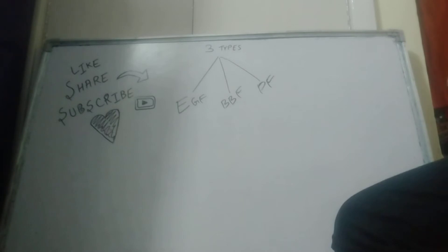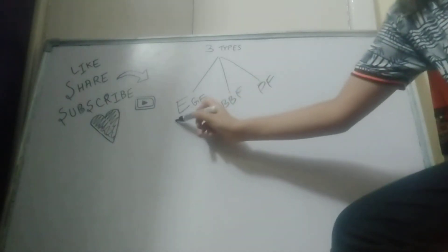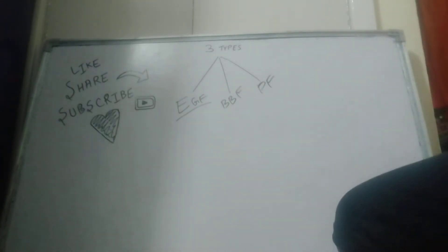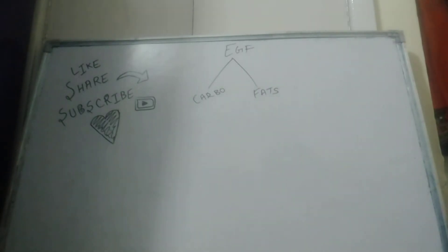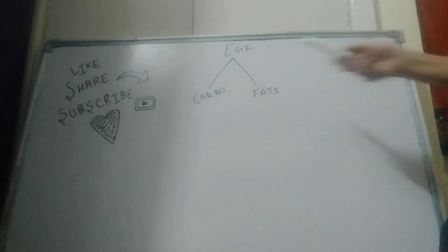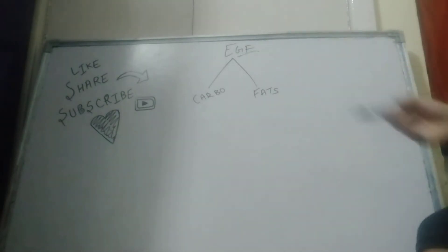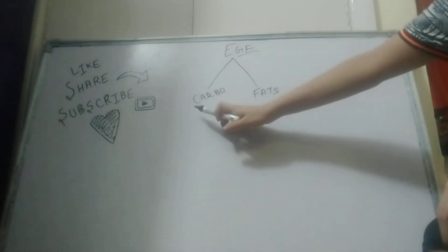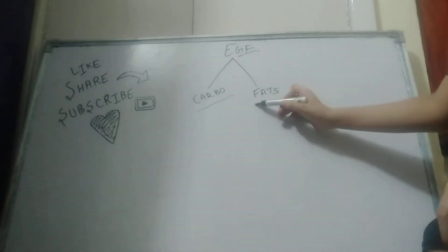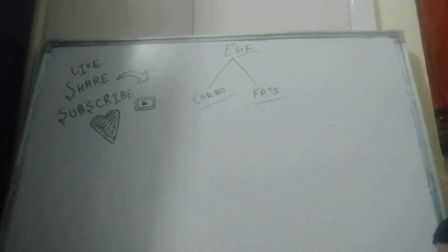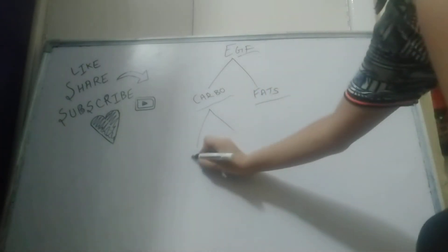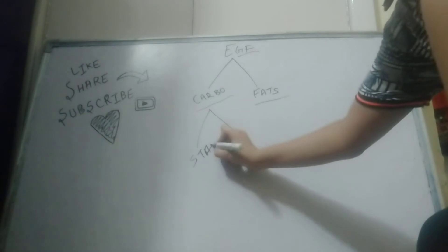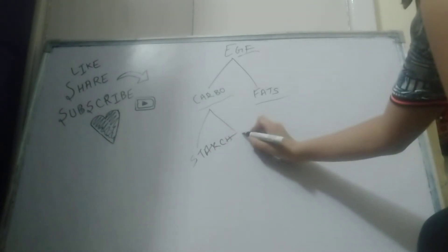Now we will talk about the first type of food — energy-giving food. What comes in it? In energy-giving food there are carbohydrates and fats. Carbohydrates are divided into two parts: the first is starch, and the second is sugar.